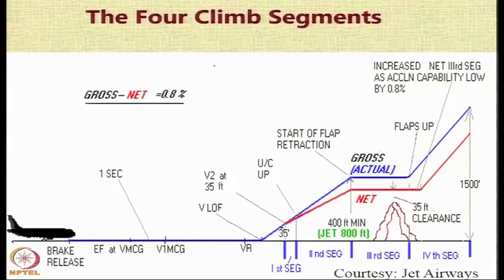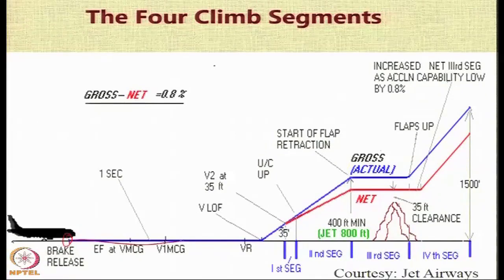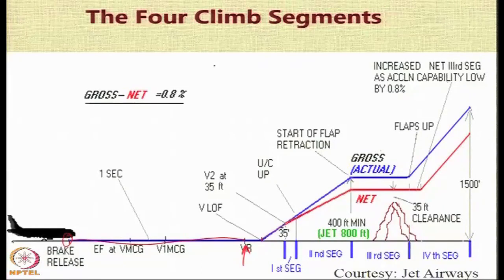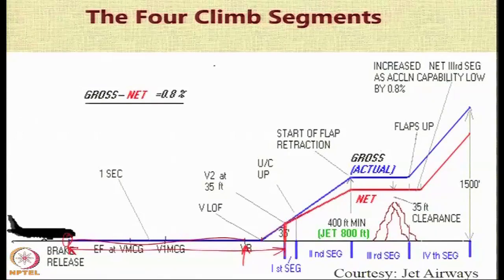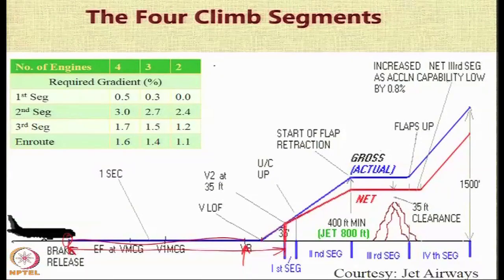This graph, courtesy of Jet Airways, shows the typical climb procedure sequence. From brake release, the aircraft accelerates to V_rotation where rotation begins, then reaches V_lift-off where the aircraft becomes airborne and starts climbing. The aircraft climbs to the obstacle clearance height of 35 feet — the distance from brake release to obstacle clearance is called the all-engine-operating takeoff distance.